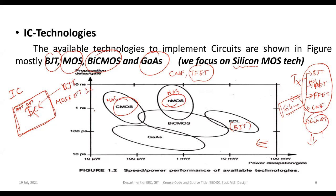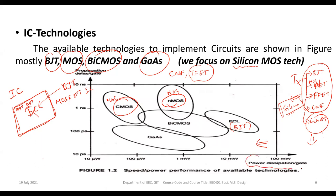For any IC technology, which technology is the best choice is decided by two key parameters: power dissipation of the circuit and propagation delay. Power consumption and speed are the primary metrics used to characterize and evaluate an integrated circuit.